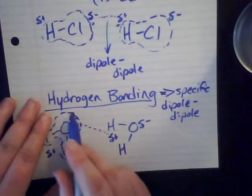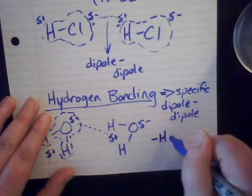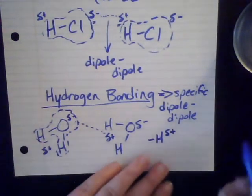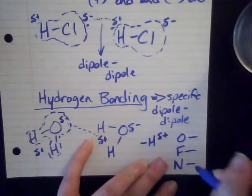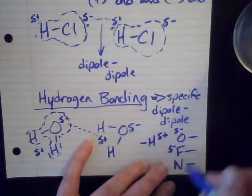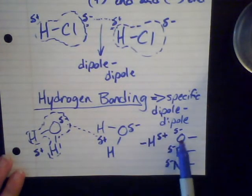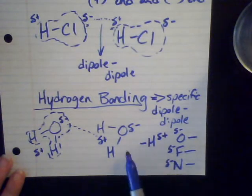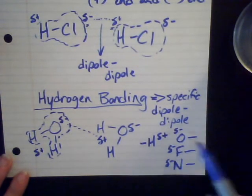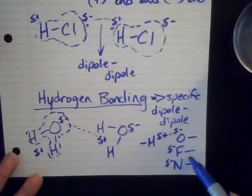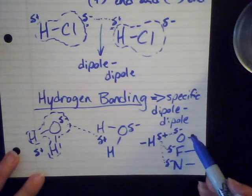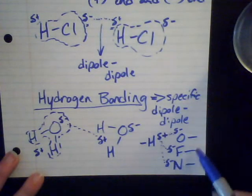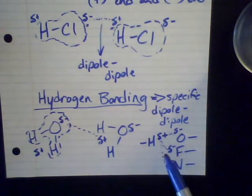The way hydrogen bonding works is that you have a partially positive hydrogen on one molecule that's attracted to a partially negative oxygen, fluorine, or nitrogen on a second molecule. The oxygen has to be in a polar bond; the hydrogen has to be in a polar bond; they're on two separate molecules — this allows hydrogen bonding to occur. The same goes for fluorine or nitrogen in a polar bond on one molecule attracting a partially positive hydrogen on another.